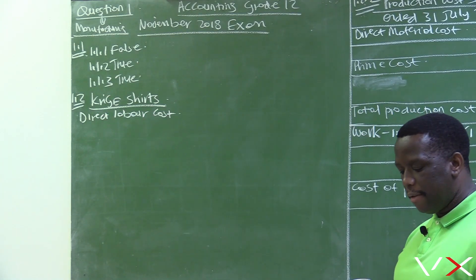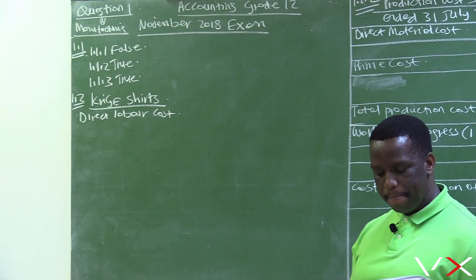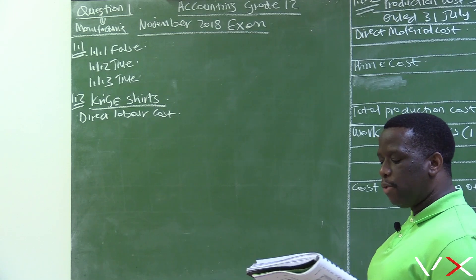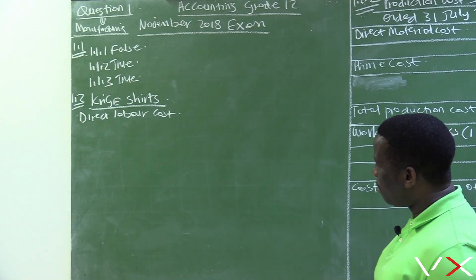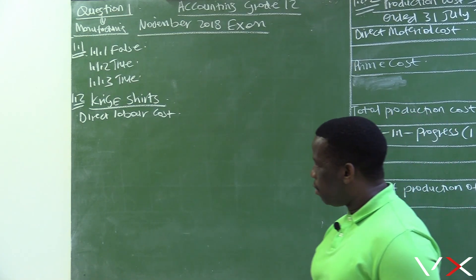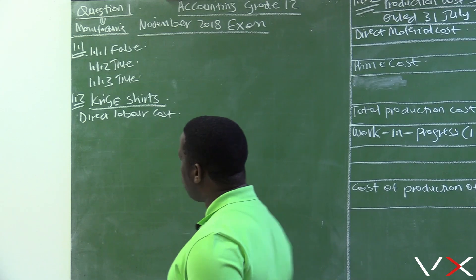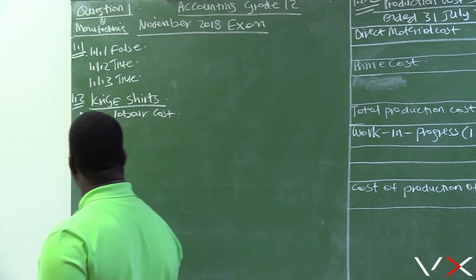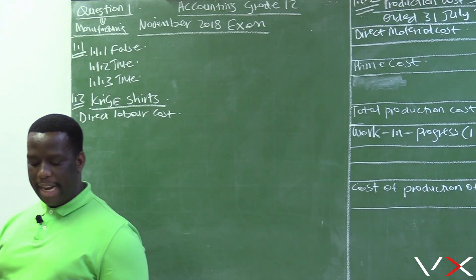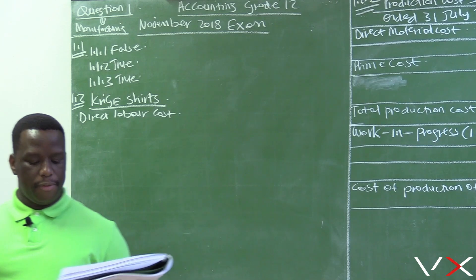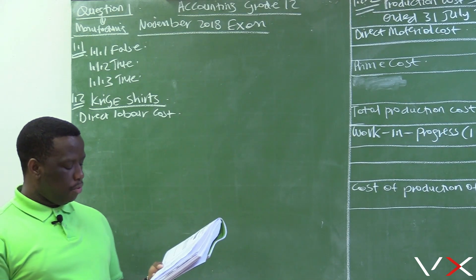1.2.1 — Refer to information C. Calculate the direct labor cost. We want to calculate the direct labor cost, which is the amount of money to be paid to the workers who are directly involved in the production of goods.